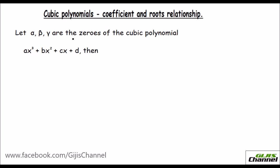And here, let us see how, in a cubic polynomial, the roots — since it is a cubic polynomial, you might have three roots. I have taken alpha, beta and gamma as roots for the cubic polynomial, and let us see how they are related to the coefficients a, b, c and d.